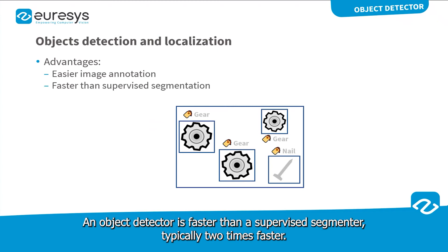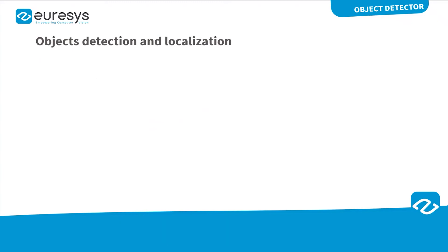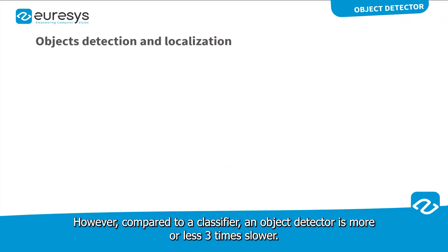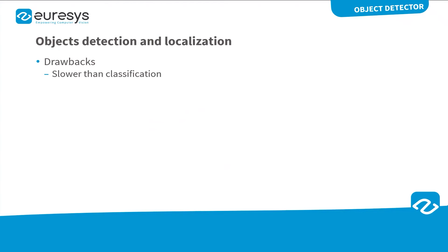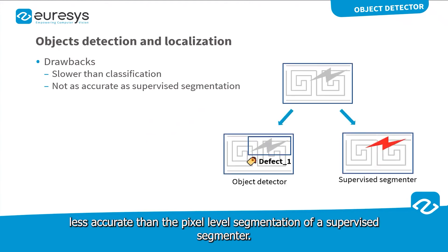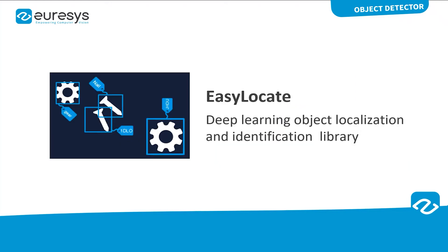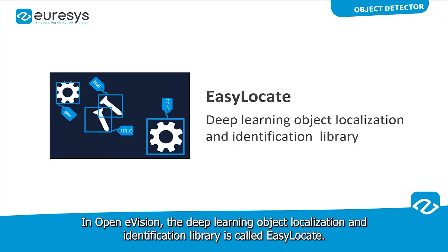An object detector is faster than a supervised segmenter, typically two times faster. However, compared to a classifier, an object detector is more or less three times slower. The localization of objects in bounding boxes is also slightly less accurate than the pixel-level segmentation of a supervised segmenter. In OpenEVision, the deep learning object localization and identification library is called EasyLocate.